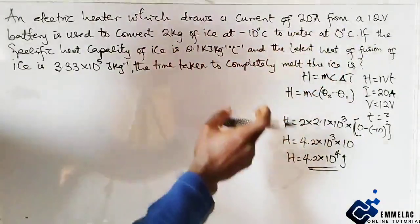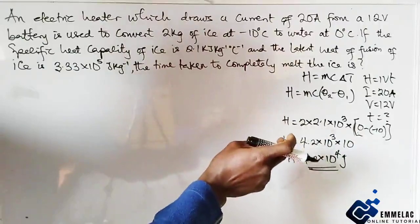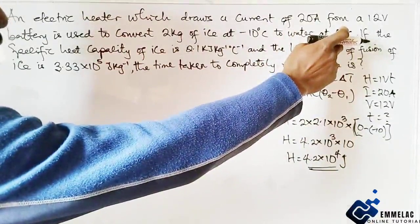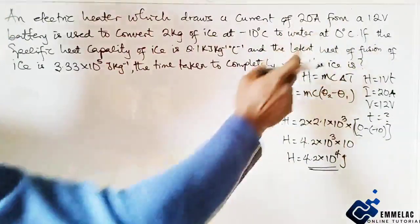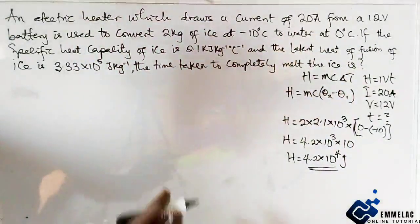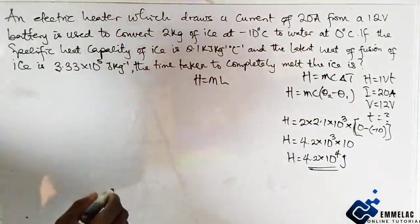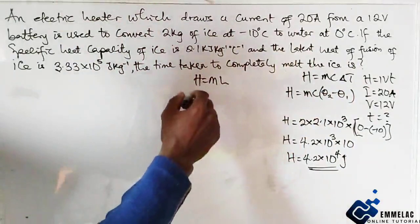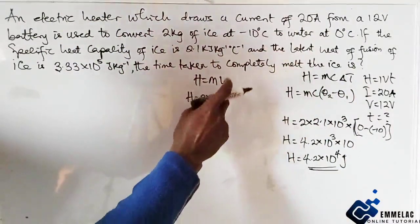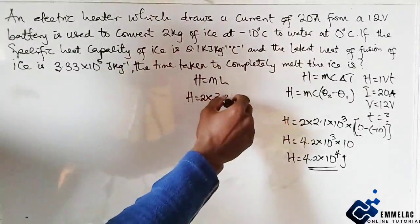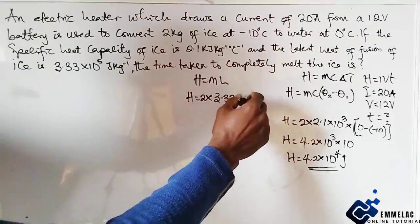Now let us find the heat gained by the same ice at zero degrees to water at zero degrees, which means there is no change in temperature. So here we employ the latent heat of fusion. The heat here will be 2 times the latent heat of fusion, which is given as 3.33 times 10 raised to power 5.